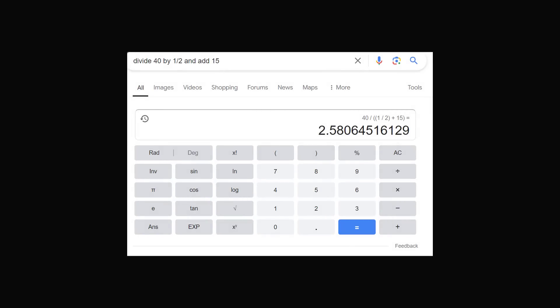But in their defense, if you type this question into Google, you will get a bizarre result of about 2.58, because Google interprets 1 half plus 15 as the first thing you need to do, and then takes 40 divided by 15 and a half. So you might get different answers depending on how people read this question, even though it's supposed to be a very simple mathematical question.